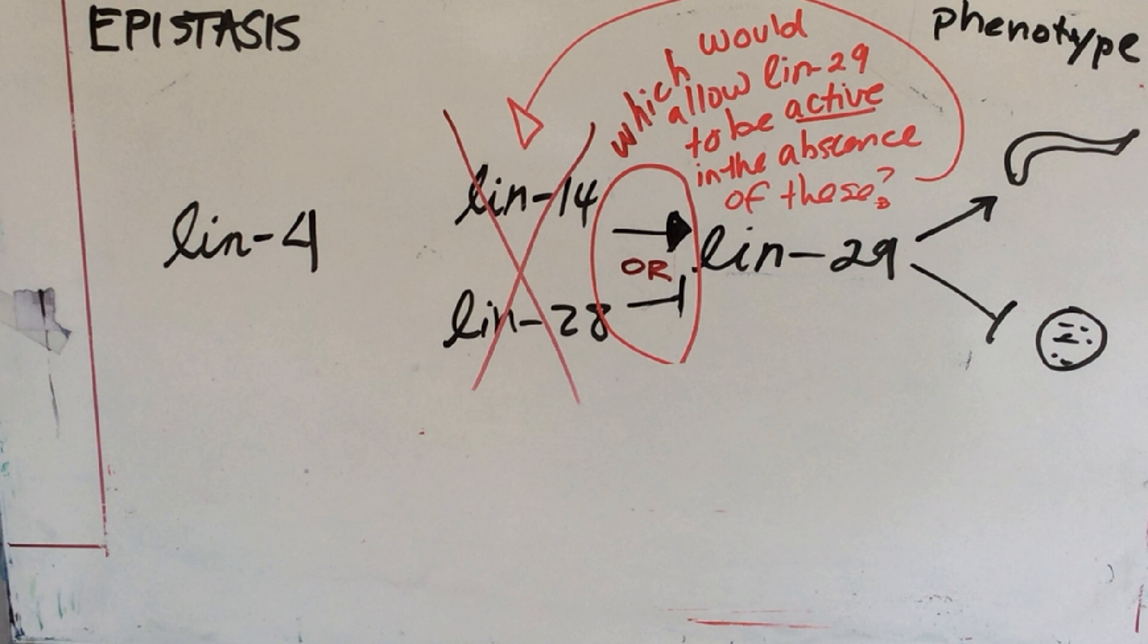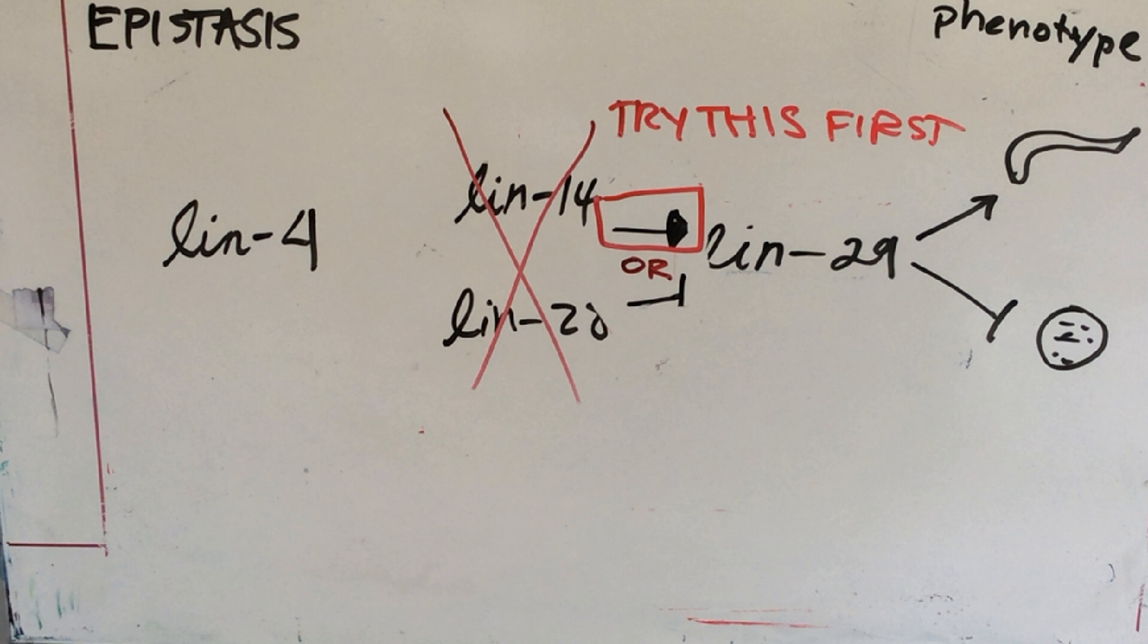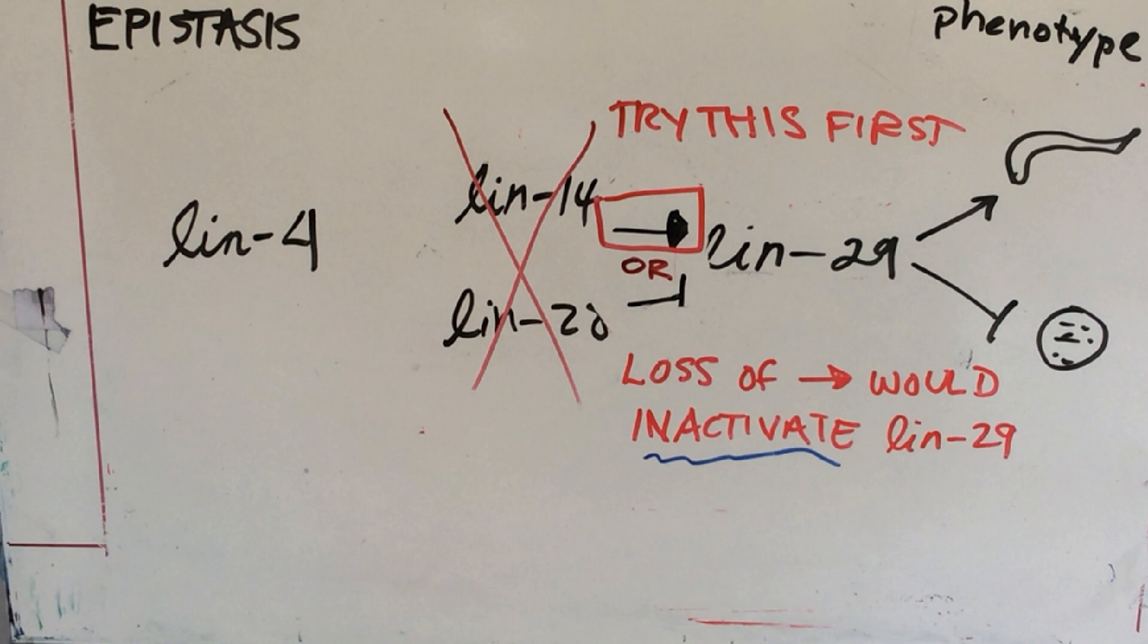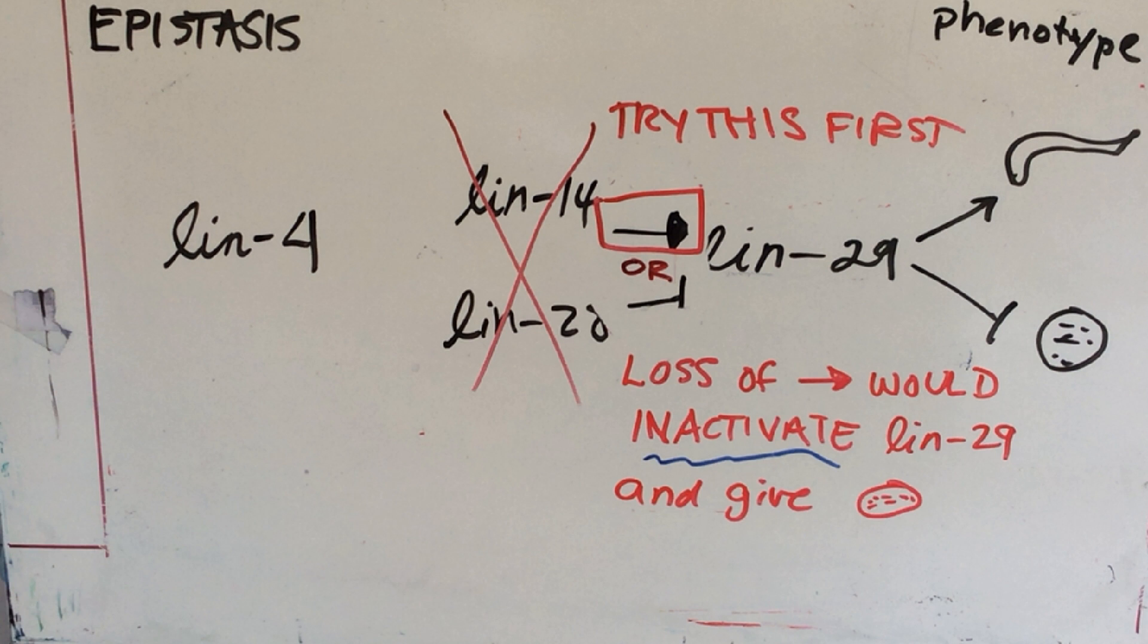So, let's try the opposite first. What if loss of LIN-14 and 28 would thus inactivate LIN-29 and give bag of worms? But, we know that their progeny is wild, that they're a wild type.